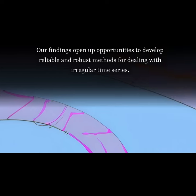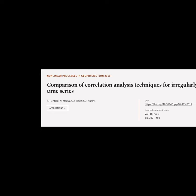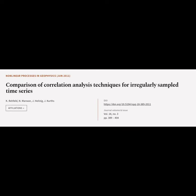Our findings open up opportunities to develop reliable and robust methods for dealing with irregular time series. This article is titled 'Comparison of Correlation Analysis Techniques for Irregularly Sampled Time Series' and was authored by Reffeld, Marwan, Heitzig, and Kuss.